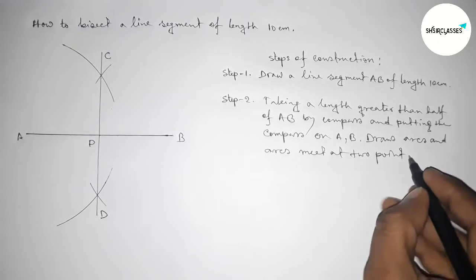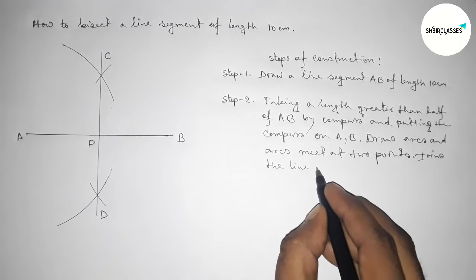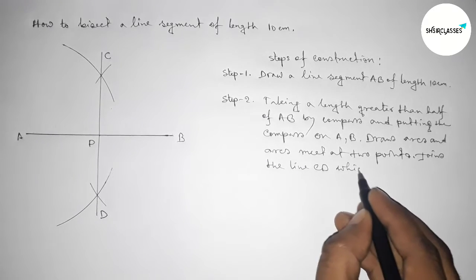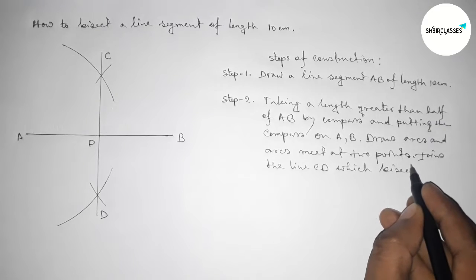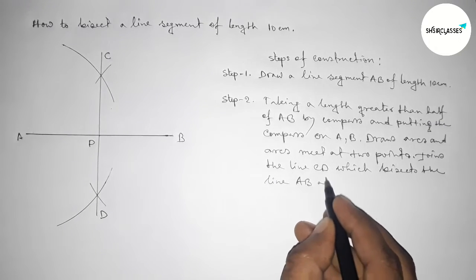So join the line CD which bisects the line AB at the point P.